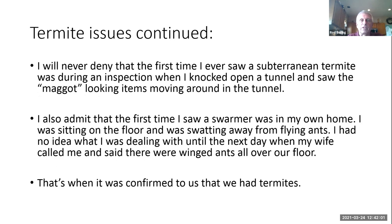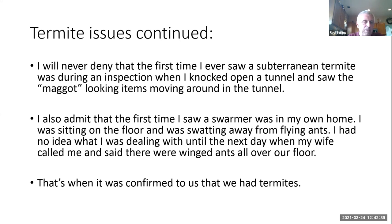I'm never going to deny that the first time I saw a subterranean termite was during an inspection when I knocked open a tunnel and saw the maggots running around in the tunnel. It took me a minute to realize what I was actually looking at. I'll also admit that before I got into being a pest control inspector, I lived in a house that was having swarmers — I didn't know what they were. At that time I did all of our reports by hand, so I'm sitting against the couch watching TV, writing up the day's reports, and there were gnats flying all over me — at least I thought they were gnats. Next day I got a call at work; my wife said, 'Hey, we have winged ants all over our floor.' That's how it was confirmed that we had termites.